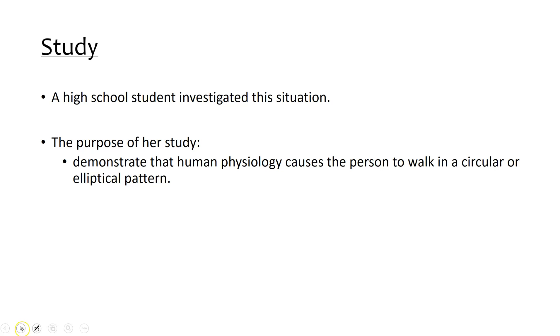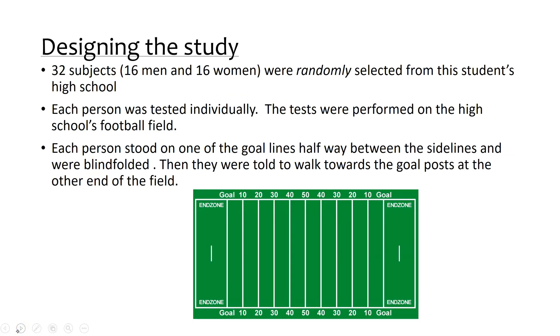She wanted to kind of see if this was true. So in designing the study, what she decided to do was collect information on high school students that she went to school with. 32 subjects total were randomly selected from the student's high school. Each person was tested individually, and the tests were performed on a high school football field. So what she did to try and mimic this situation of not being able to really see where you're going: each person stood on the goal line halfway between the sidelines, so they stood right here, kind of dead center in the football field on one end of the football field. Then they were told to walk to the other goal posts. So the goal would be to walk all the way straight, but what they wanted to see is if people tended to sort of veer off to one side or the other.